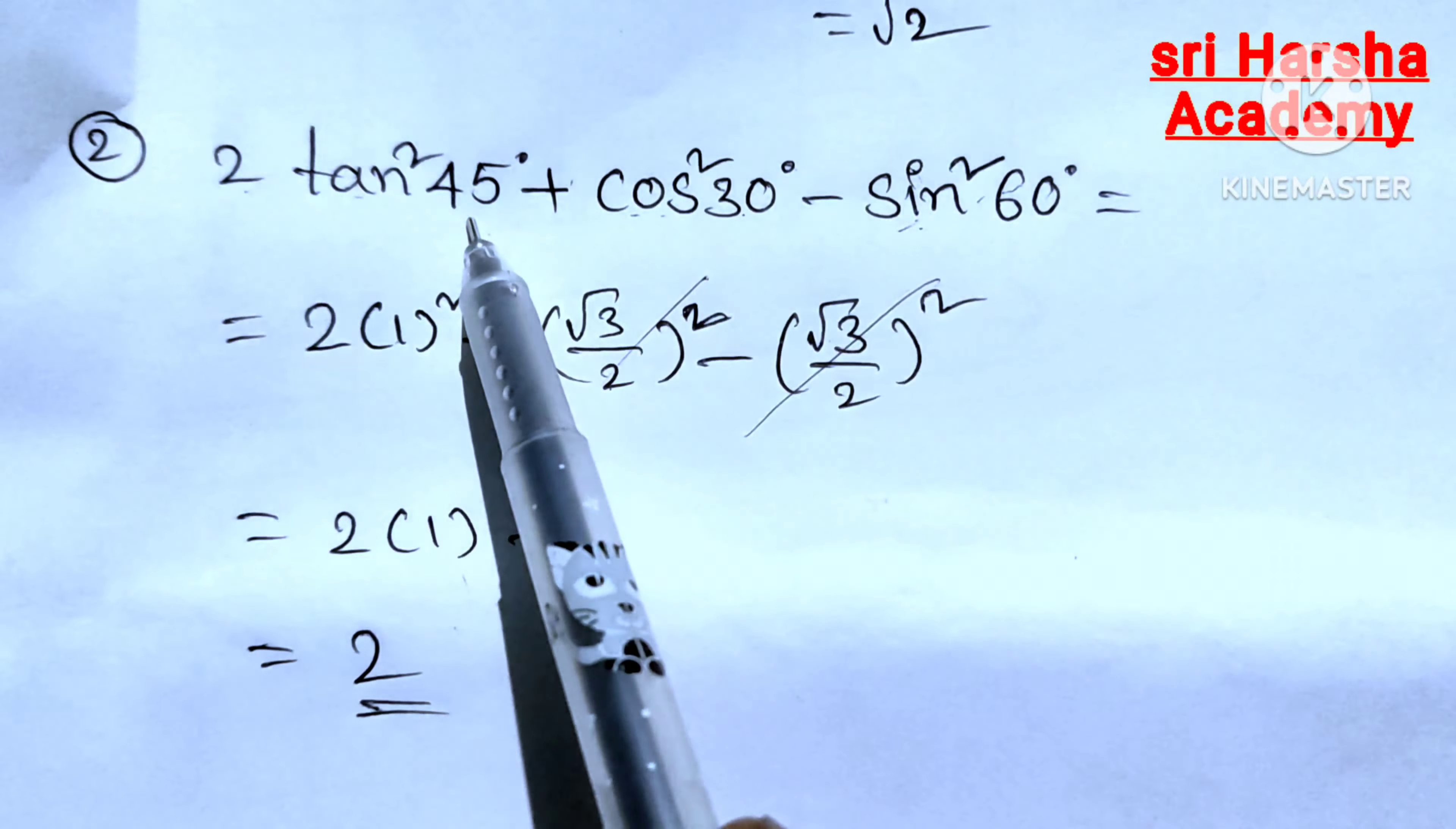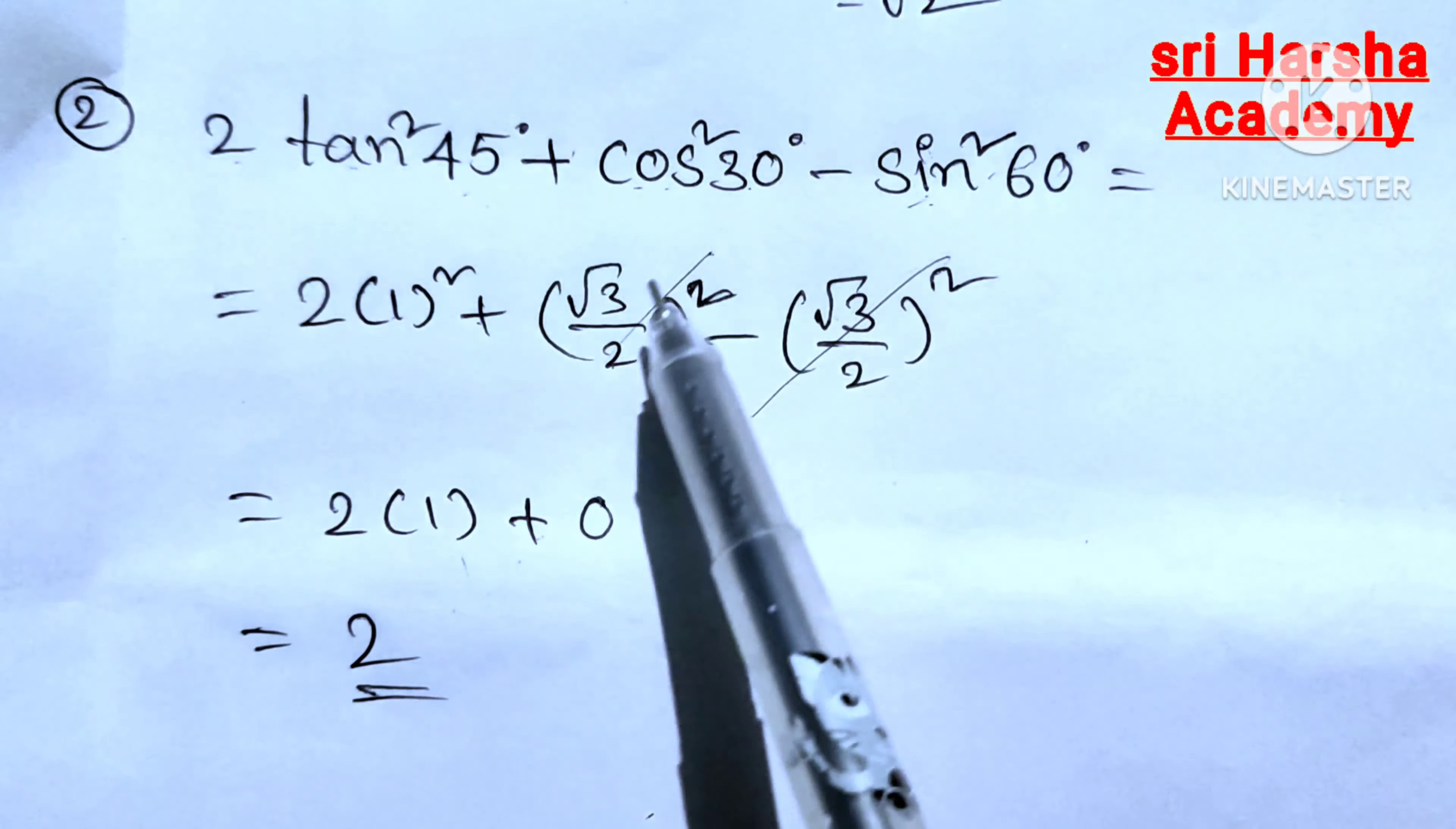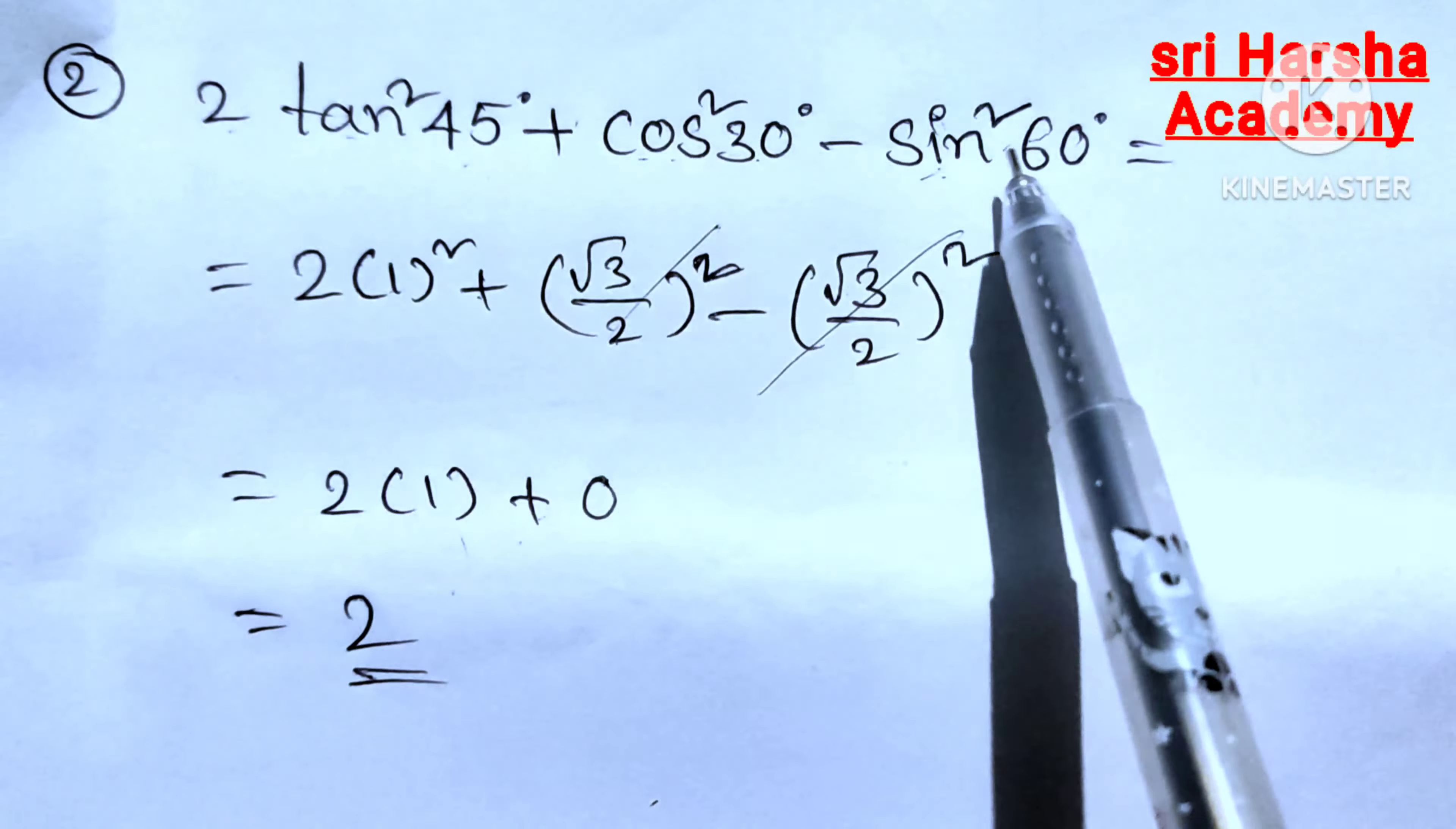Here 2 tan 45 degrees value is 1, but here tan square 45 degrees, so 1 square. Plus cos 30 degrees value is root 3 by 2. Here cos square 30 degrees, so root 3 by 2 whole square.